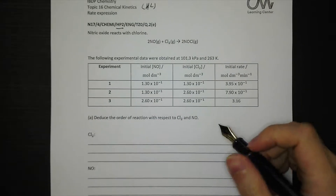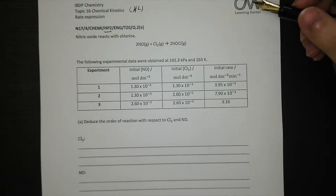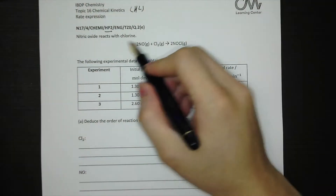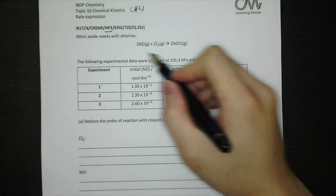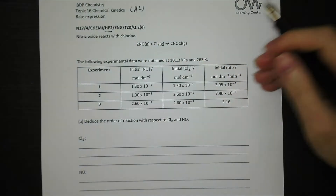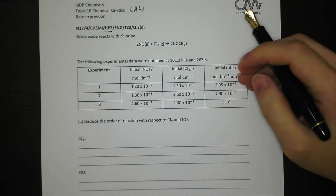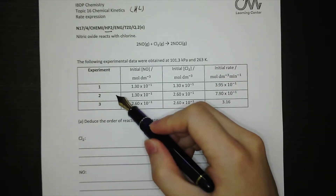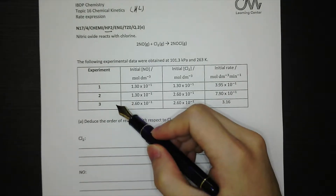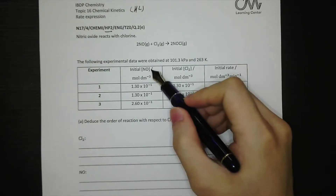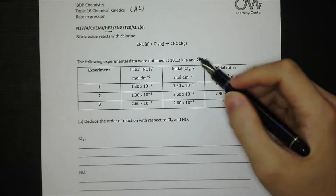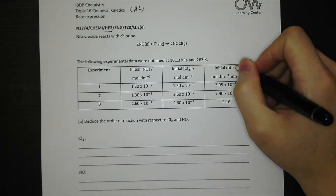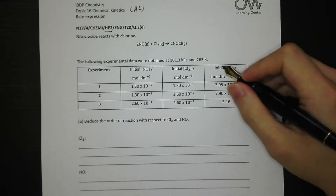Nitric oxide reacts with chlorine, and the chemical equation is shown here. The table shows the experimental results for three different experiments with different concentrations of NO and chlorine, and also the rate for each experiment.